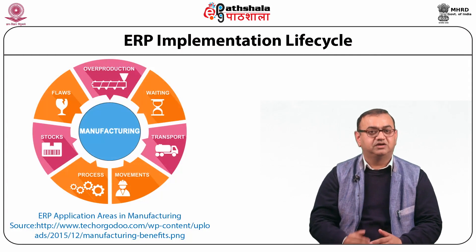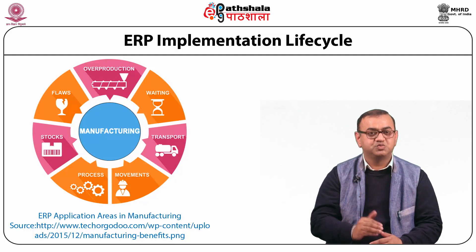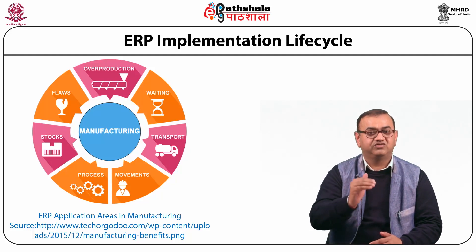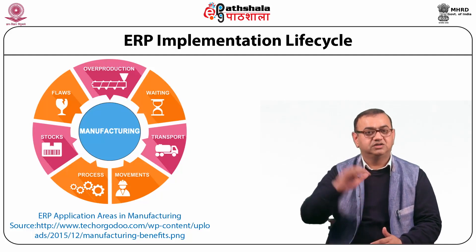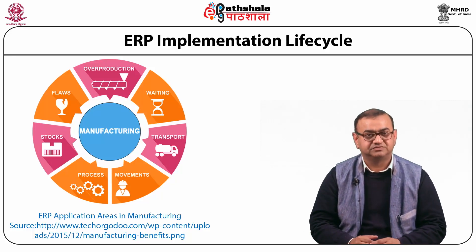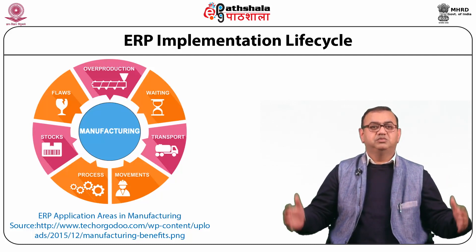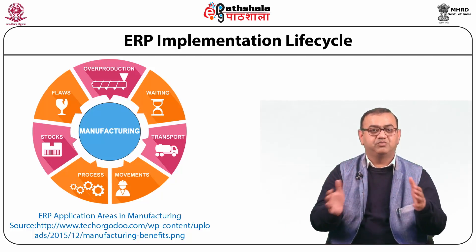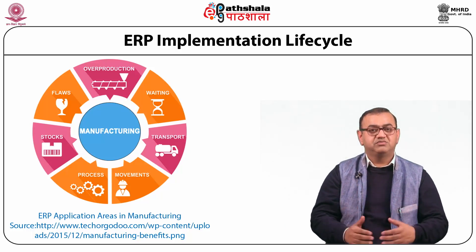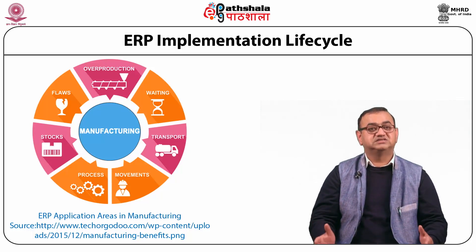ERP helps reduce inventory by helping the manufacturing process flow more smoothly and providing more visibility of order fulfillment. This helps reduce inventory and ensure faster delivery of material, thus improving the supply chain. In terms of standardizing HR information, in companies with multiple business units, HR may not have a unified method for tracking employee time and communicating with business benefits and services. ERP can fix that easily.